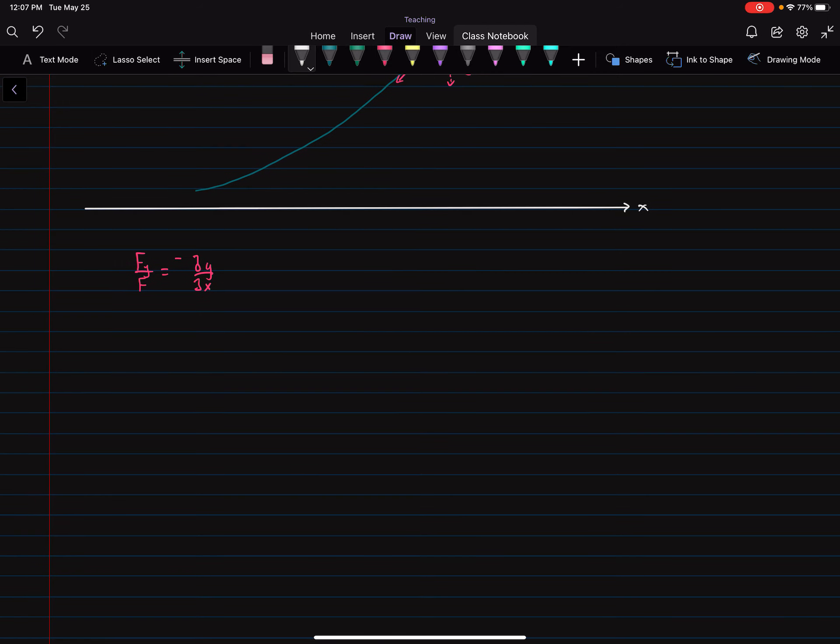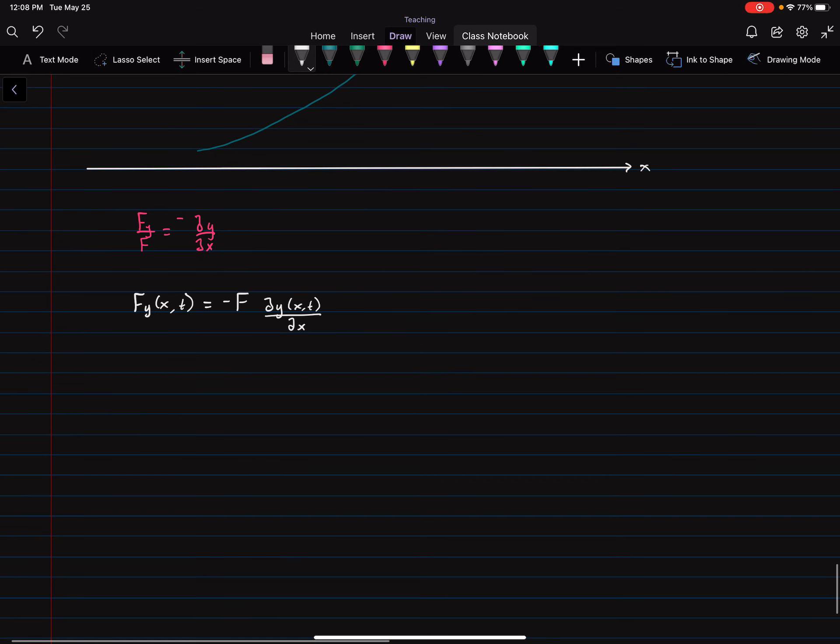So that means Fy at X, T is equal to negative F times dy of X and T with respect to dx. Just writing it a little bit more explicitly.